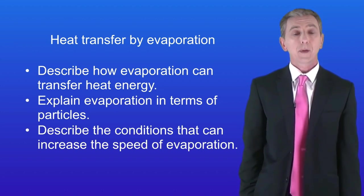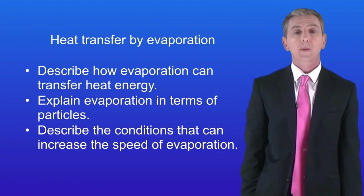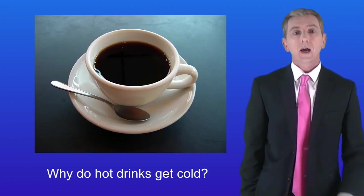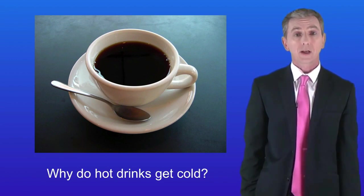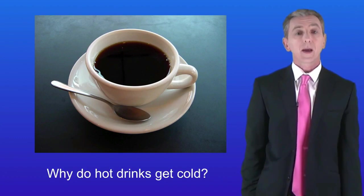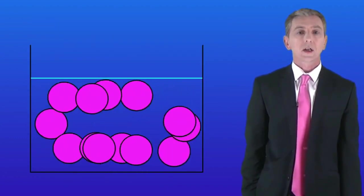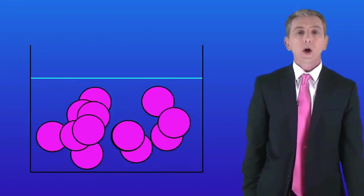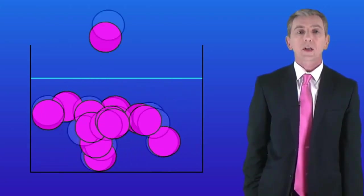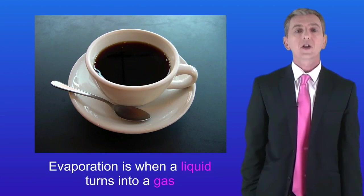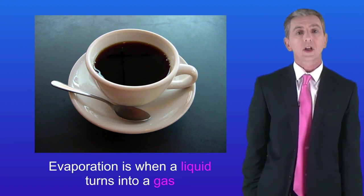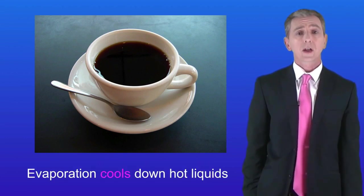By the end of this video you should be able to describe how evaporation can transfer heat energy, explain evaporation in terms of particles, and describe the conditions that increase the speed of evaporation. I've got here a cup of coffee and the question is why do hot drinks get cold? We've already seen how heat energy can move by conduction, convection and radiation. But there is another way — that's by evaporation of liquids. If we look at the particles in a liquid we can see that they are moving around. The particles are attracted to each other which is what keeps them together. Some of the particles on the surface might have enough energy to break away from the others and turn into a gas — this is called evaporation. The particles which are leaving the surface are carrying away energy, meaning the liquid is losing energy and getting colder. So evaporation cools down hot liquids.